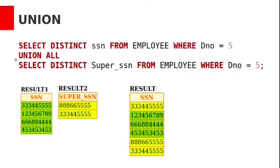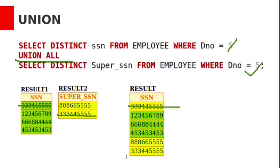Oracle supports the UNION ALL operation. This selects all rows from query 1 and all rows from query 2, including duplicates. So if an SSN value appears in both results, it will be listed two times when using UNION ALL.